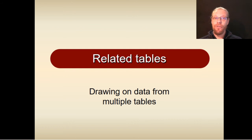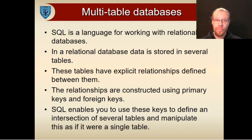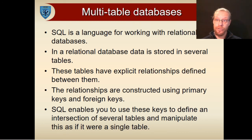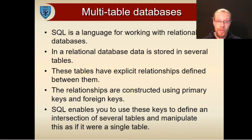So far, we've been looking at queries that generate results from a single table. Data is very seldom represented using just one table. SQL is designed to make it easy to work with relational databases — that is, data that is represented across several tables with explicit relationships between the tables. These relationships are established using the primary and foreign keys in the tables. Using these relationships, SQL allows one to join the tables and work with the resulting joined table as though it were a single table.